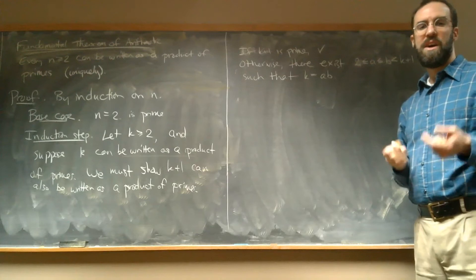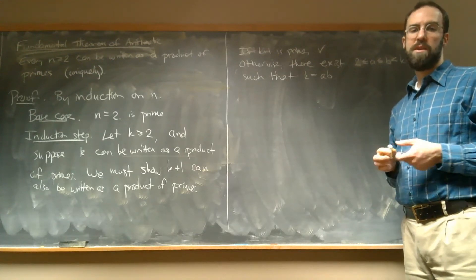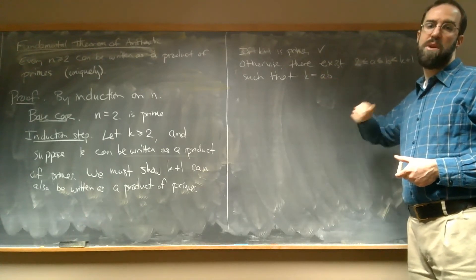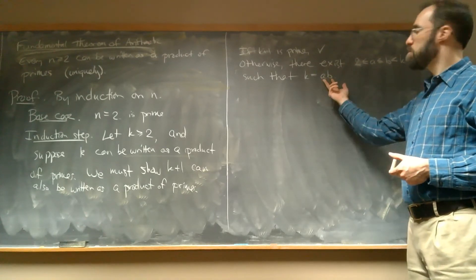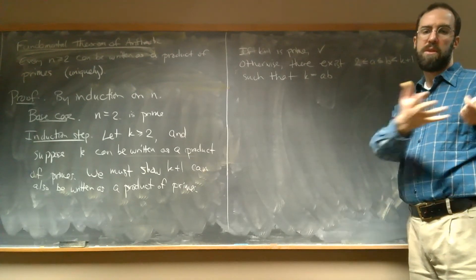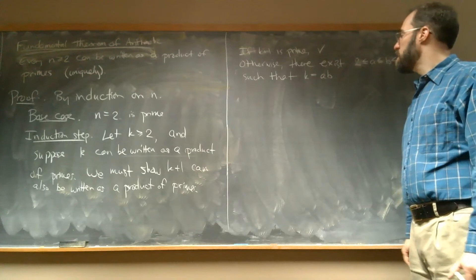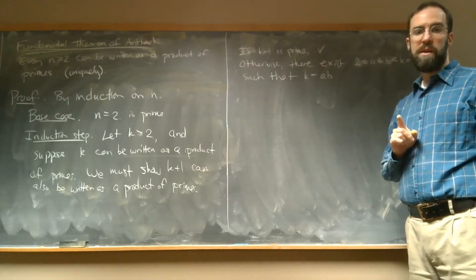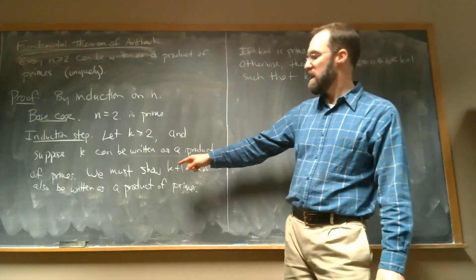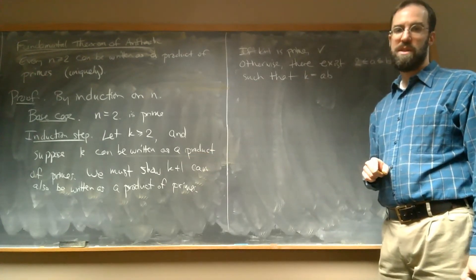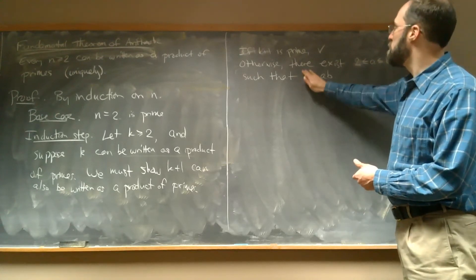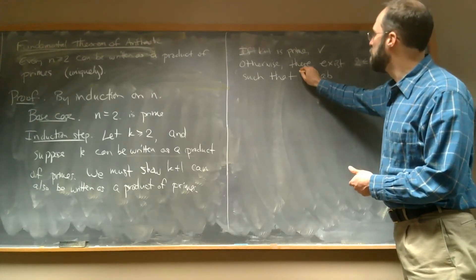So there exist those such that K is equal to A times B. Now what? And so actually, here's where we get stuck. Because what I really want to say is, oh well, A and B, you can write them as a product of primes, and then since we're multiplying them, K itself is going to be a product of a bunch of primes, like the primes that come from A and the primes that come from B. But I don't know that because all we've assumed is that K can be written as a product of primes. But there's nothing about K here. There is something about K because I messed up. This should say K plus 1.